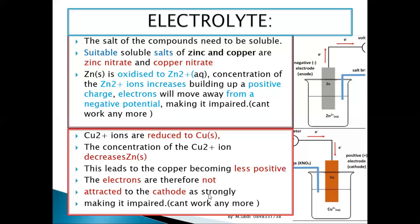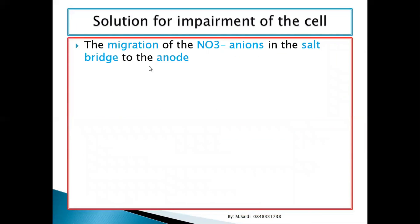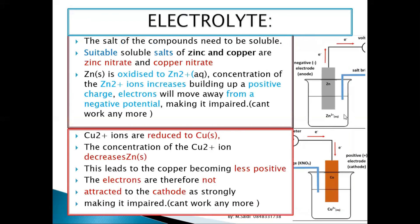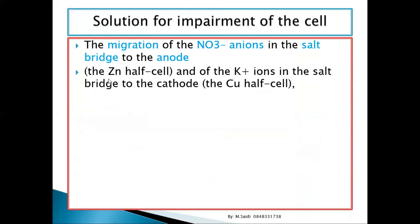The cell can no longer function properly, so we need a solution to this impairment. The solution involves the migration of nitrate anions — negatively charged particles called anions — from the salt bridge to the anode. At the anode, Zn²⁺ ions have accumulated, creating excess positive charge. We need negative anions to neutralize this buildup.